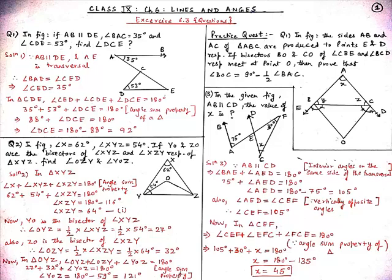In the figure, if AB is parallel to DE, angle BAC is equal to 35 degrees and angle CDE is equal to 53 degrees, then find angle DCE. According to our question, if AB is parallel to DE, where AC is a transversal.